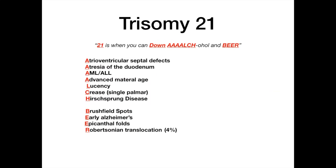Those are the high yield pictures. To summarize the mnemonic: 21 is when you can down ALK and beer. ALK with four A's — A-A-A-L-C-H — stands for ASD, atresia, AML, advanced maternal age, lucency (nuchal translucency), crease (single palmar), and Hirschsprung. BEER stands for Brushfield spots, early onset Alzheimer's, prominent epicanthal folds, and in 4% of cases, Robertsonian translocations. If you can get that straight, you should get most if not all questions about trisomy 21 correct.